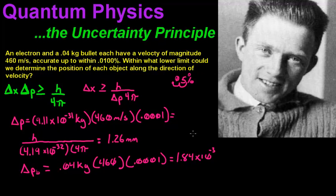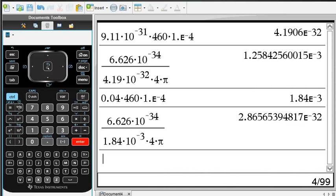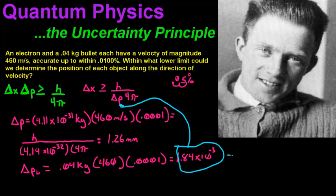And then we are just going to substitute this in there, same thing that we did for the electron. And when we do that, we get 2.87 times 10 to the negative 32nd meters. So this uncertainty is extremely small, which means that we can be certain that this bullet is going to be within 2.87 times 10 to the negative 32nd meters.